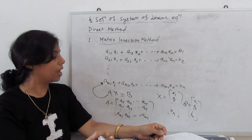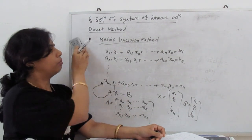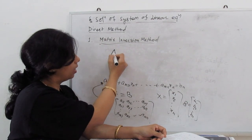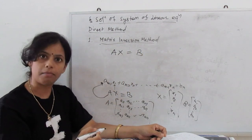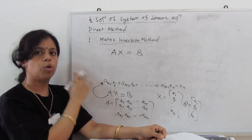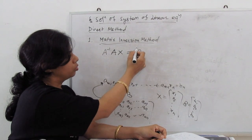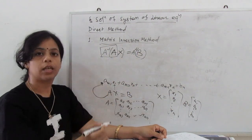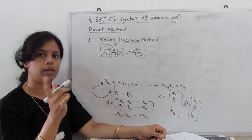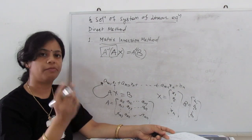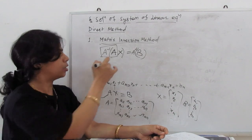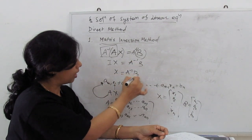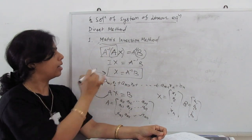Next, how do we find the values of x1, x2, and the other variables? That is very simple. With the help of the matrix inversion method, we write AX = B. If we multiply both sides by the inverse of A, we get A⁻¹·A·X = A⁻¹·B. Since A⁻¹·A gives the unit matrix I, we get I·X = A⁻¹·B, or simply X = A⁻¹·B. This is called the matrix inversion method.